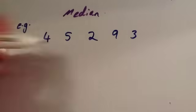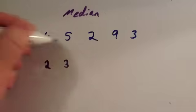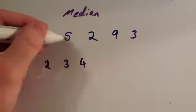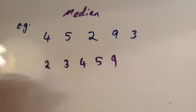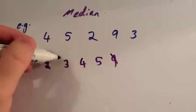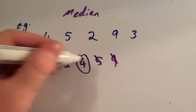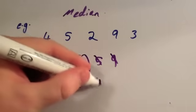The first thing is to arrange them in numerical order. So 2's the lowest, then 3, then 4, then 5, and then 9's the largest. Now we're going to look at the middle number. I sometimes cross them off one like this, and you'll find that the middle number is 4. So the median equals 4.